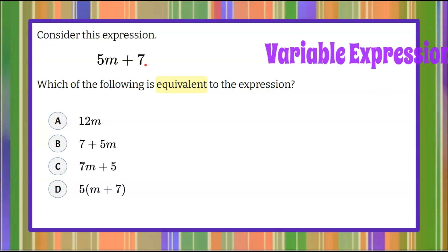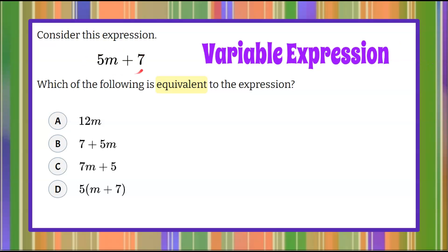So first I want to review with you that this is what we call a variable expression because there's an unknown here. This letter m is a variable. So when we write this we have two terms. We have 5m, a variable term, and add 7, which is a constant term meaning it doesn't ever change, it's always 7. 5m is variable depending on the value of m, the value of the expression 5m changes.